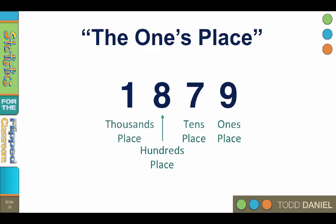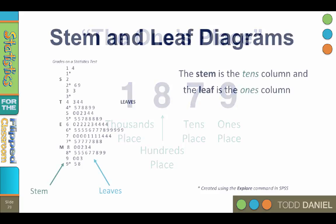So if we consider the number 25, it has a two in the tens place and a five in the ones place. A stem and leaf diagram puts the tens column as the stem, and the leaves are the ones column.